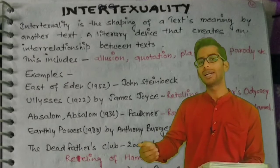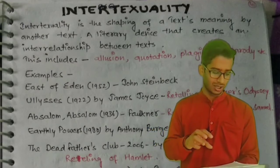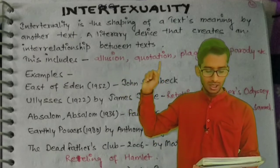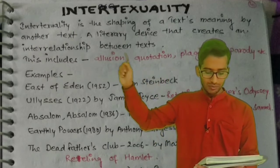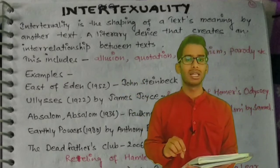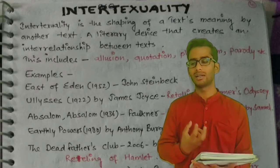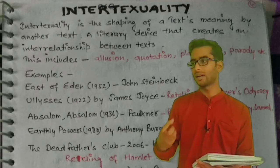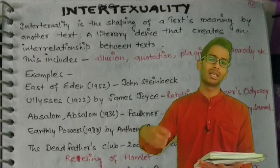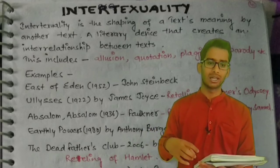What happens is that a writer takes another writer's work and explains it in his own way or borrows from it. This includes allusion, quotations, plagiarism, and parody. Sometimes it is considered plagiarism when a writer copies or explains another writer's book in their own way.